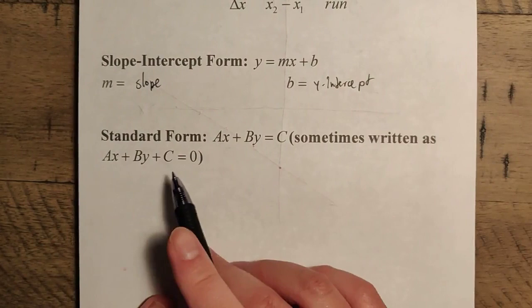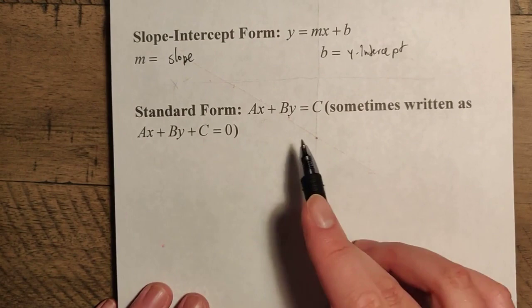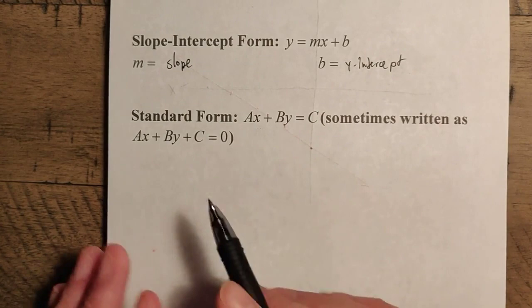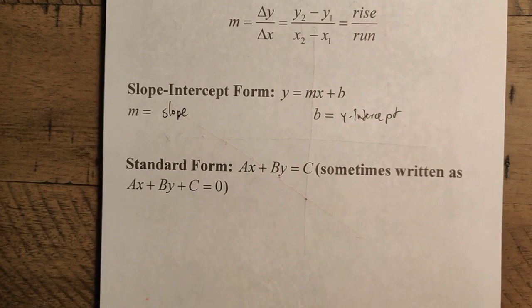And also, we mathematicians just also like to have zero on one side, so that's something equal to zero. So sometimes you can also write it as Ax plus By plus C equals zero. Notice that in this situation, this C and this C are going to be different. One's going to be negative, one's going to be positive, but it really doesn't matter because A, B, and C are all just placeholder numbers anyway.